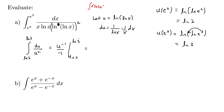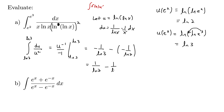Plugging in natural log of 3 we get negative 1 over natural log of 3, minus negative 1 over natural log of 2. Rearranging, that gives us 1 over natural log of 2 minus 1 over natural log of 3. That came out pretty nicely.